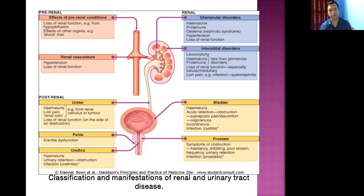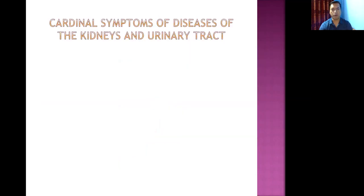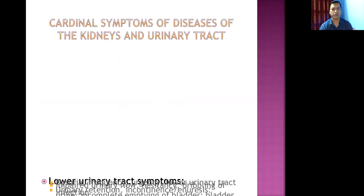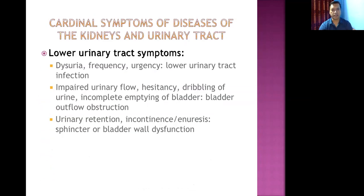These are the classic features of BPH. Now, regarding the cardinal symptoms of kidney and urinary tract diseases: if lower urinary tract disorders are present, common symptoms include dysuria (difficulty urinating), increased frequency, and urgency — where the person cannot wait to pass urine. These are quite common in lower urinary tract infections.